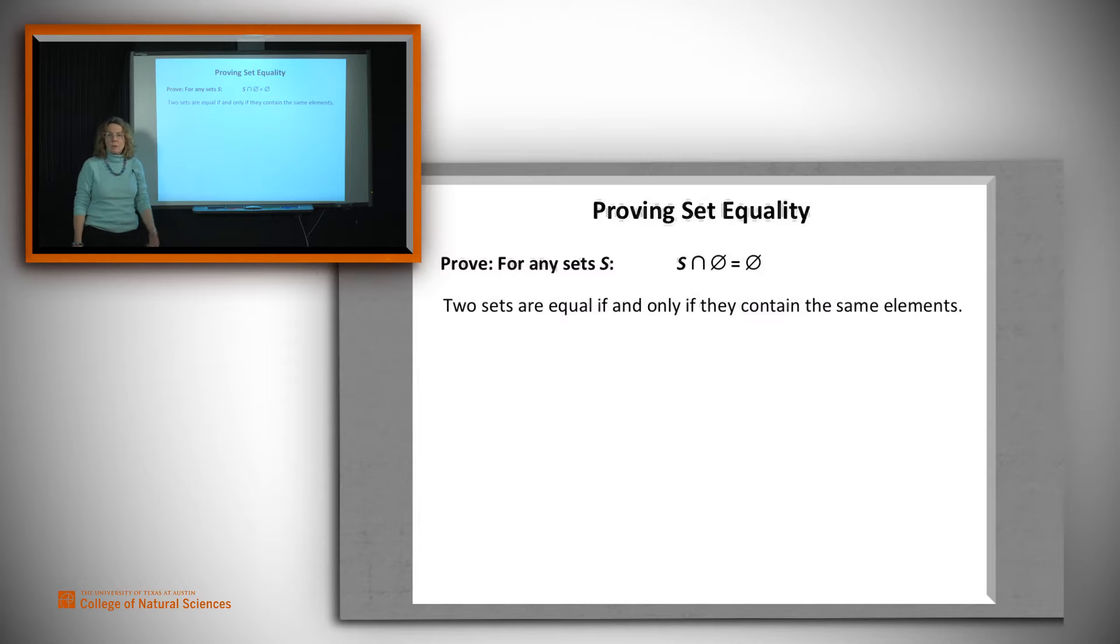We know that two sets are equal just in case they contain the same elements. That's the definition. So if we want to do this proof, we can show two things. That if some arbitrary element x is in the first of these two sets, it has to be in the second one.